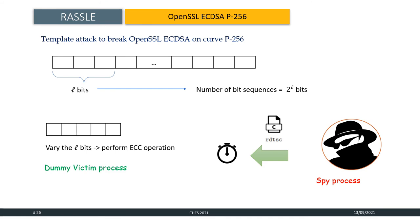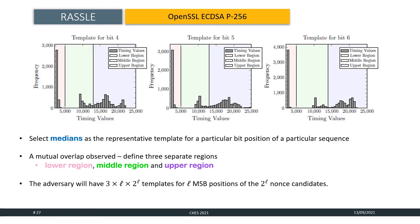As the adversary requires to retrieve only L MSBs of the nonce, the spy considers only those L timing observations that correspond to the L MSBs. Now the adversary has timing samples for L MSBs of each of the 2 to the power L bit sequences of the nonce. Next, the adversary selects medians from each of these timing distributions as a representative template for a particular bit position of a particular sequence. From the figure, it is apparent that the distribution of timing samples for each bit position can be subdivided into three regions. The most intuitive explanation of this observation is that the spy tries to achieve synchronization with the help of deadline scheduler without explicit handles inside the victim code. Due to the absence of perfect synchronization mechanism, there is a mutual overlap between the timing samples of any two adjacent trace points. Therefore, we define three separate regions in the timing distribution, a lower region, a middle region and an upper region and we select medians from each of these regions. Therefore, the adversary will have 3 times L times 2 to the power L templates for L MSB positions of the 2 to the power L nonce candidates.